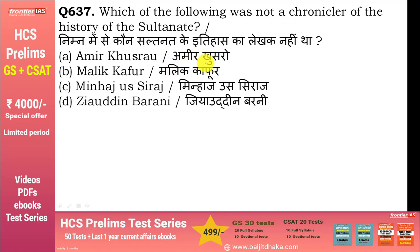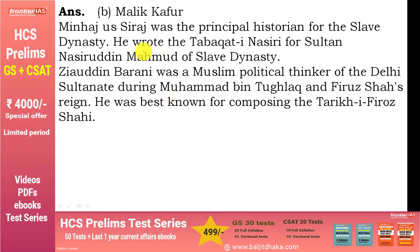Which of the following was not a chronicler of the history of the Sultanate? Amir Khusrow answer नहीं हो सकता क्योंकि उन्होंने पाँच sultans के बारे में लिखा। Minhaj-us-Siraj slave dynasty के principal historian थे और उन्होंने 'Tabaqat-i-Nasiri' लिखी। Ziauddin Barani ने Muhammad bin Tughlaq और Firoz Shah Tughlaq के reign में काम किया और 'Tarikh-i-Firoz Shahi' लिखी।